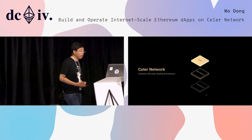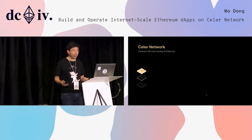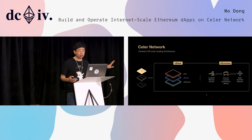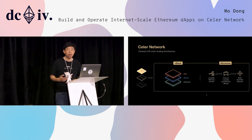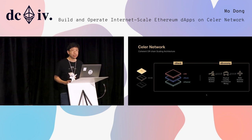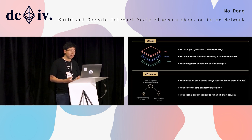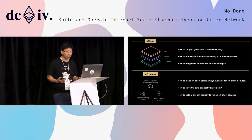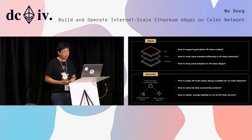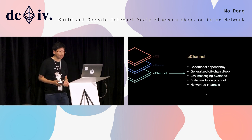Jumping to Celer Network — what is Celer Network? It's a coherent off-chain scaling architecture. Celer Network has two parts: one is the technology part called cStack, where we propose a layered technology architecture, and the other part is cEconomics, where we propose some crypto-economic constructs to solve challenges in state channel networks. For cStack, we basically solve the question of how to support generalized off-chain scaling, how to route value transfer efficiently in off-chain scaling networks, and how to bring mass adoption to off-chain DApps by providing a better user interface and developer experience.